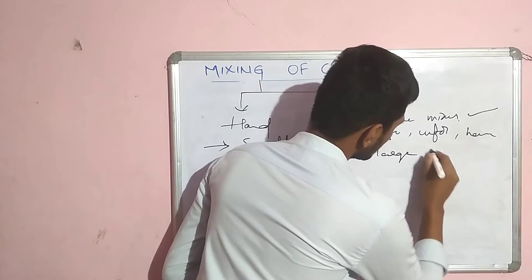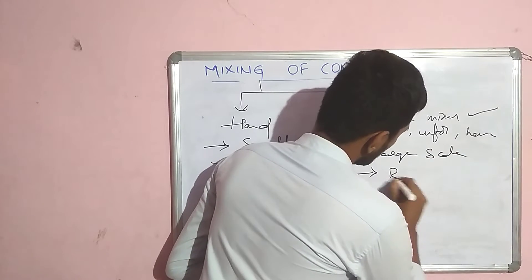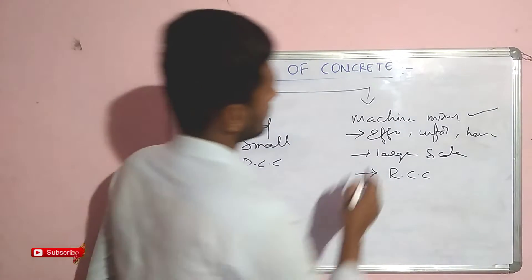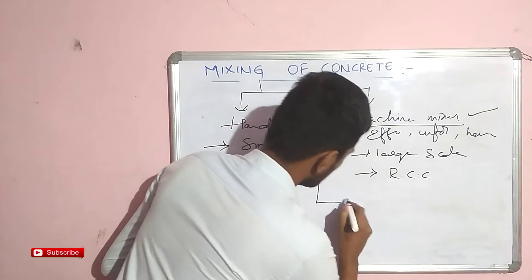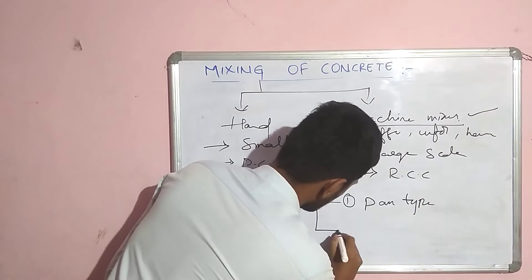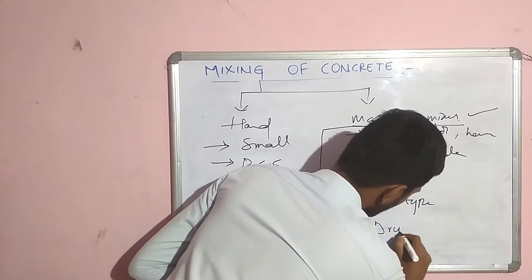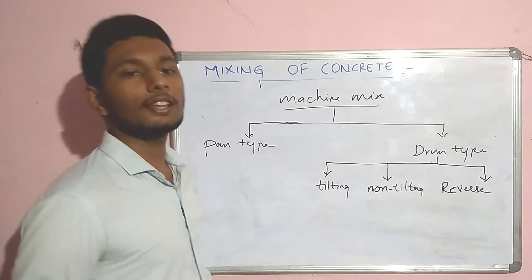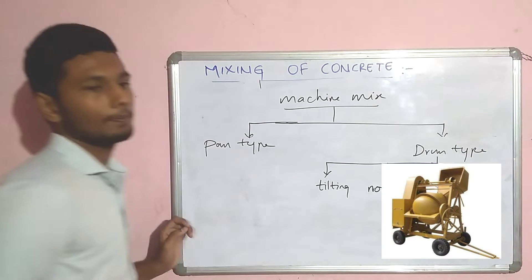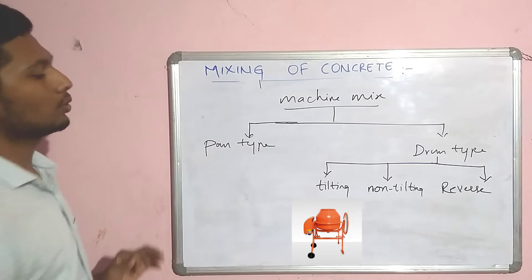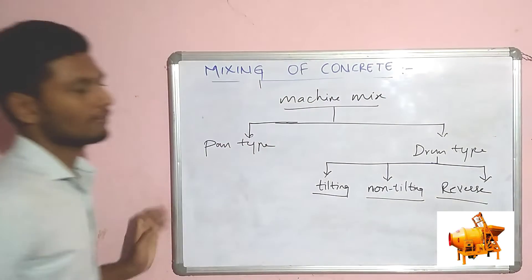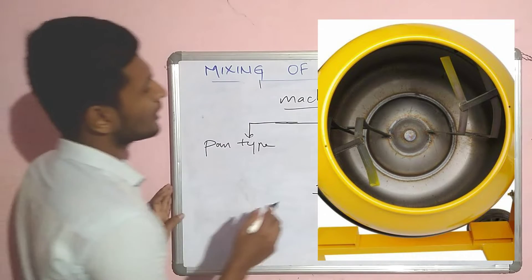Machine mixing is preferred for reinforced concrete structures. There are two types of machine mixes: number one is pan type and number two is drum type. The drum type is further divided into three categories: one is tilting type, another is non-tilting type, and another is reverse type.